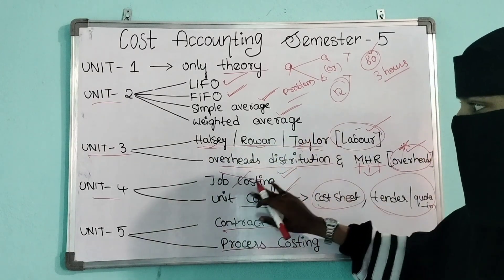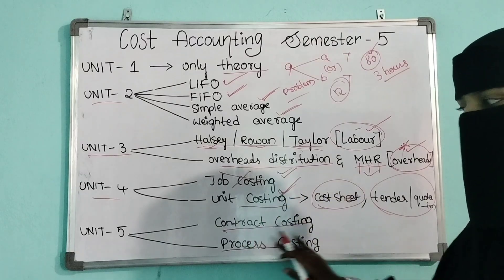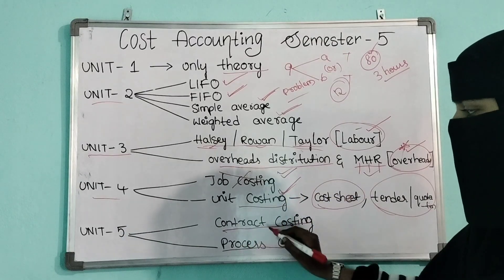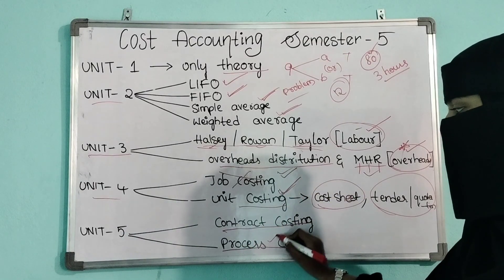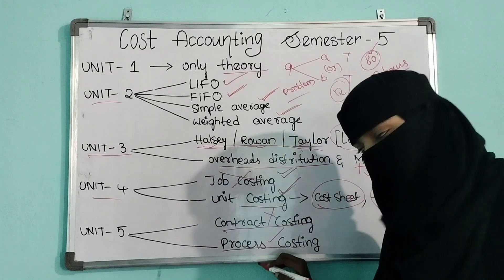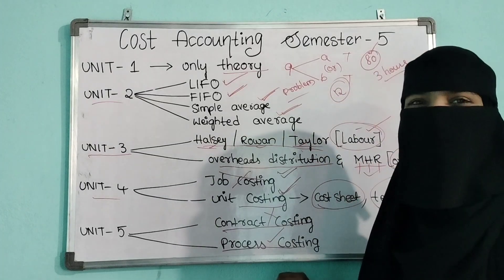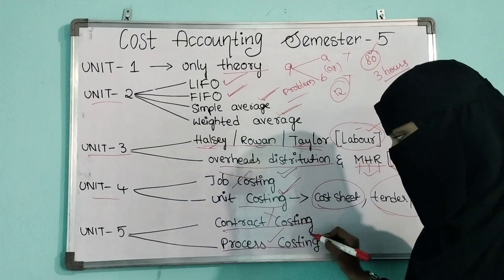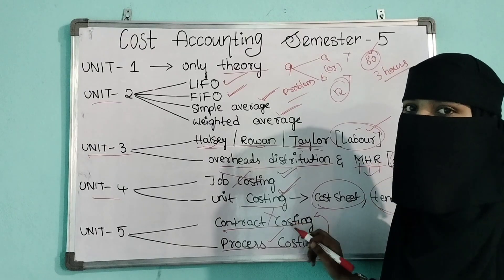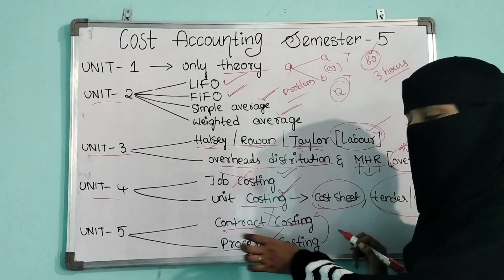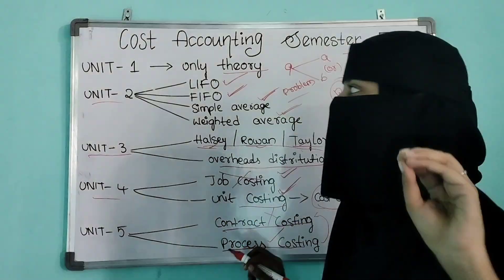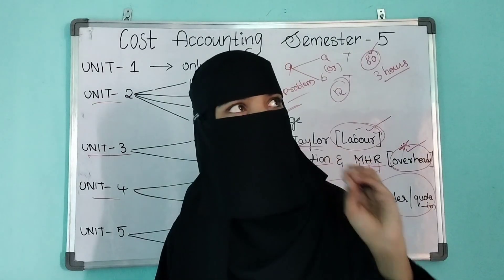Unit 5 has two parts: Contract Costing and Process Costing. I suggest you go with Process Costing, leaving Contract Costing, because Process Costing is much easier compared to Contract Costing. If you want to go with Contract Costing you can, but Process Costing is the easier option. I'm going to upload explanation videos for each and every unit.